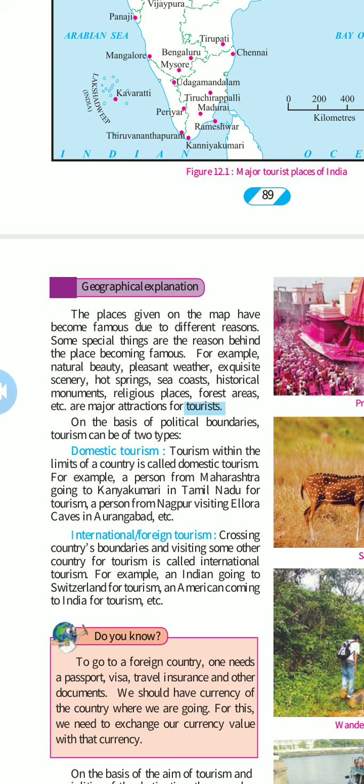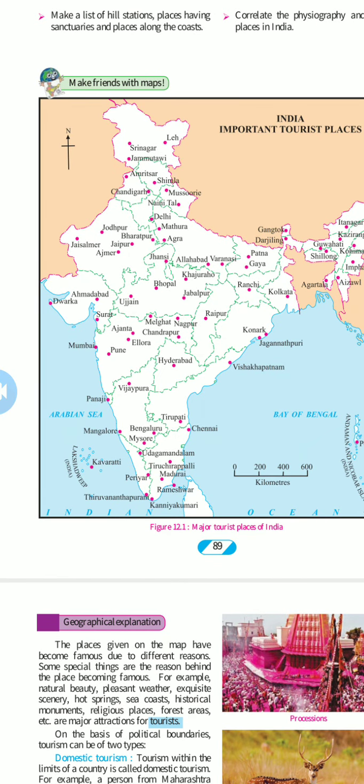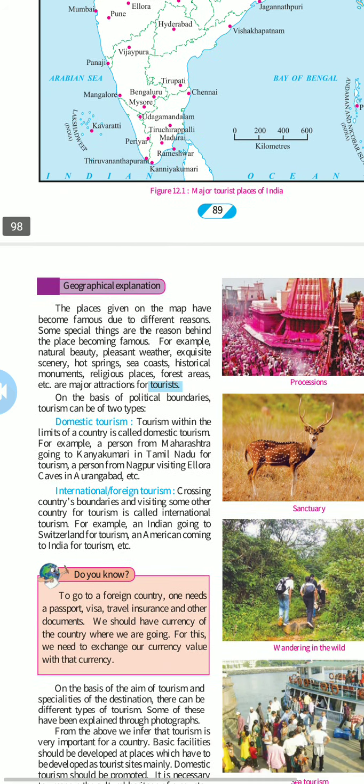Looking at India's example, there are 29 states and each is popular for its own things. Ajmer is popular for its dargah. Delhi is popular for India Gate and the metro. Mumbai attracts people because of its sea and Bollywood. South India has a high literacy rate and lots of sea coastline. Lucknow is very popular for its language and culture. These are different states popular for different purposes.